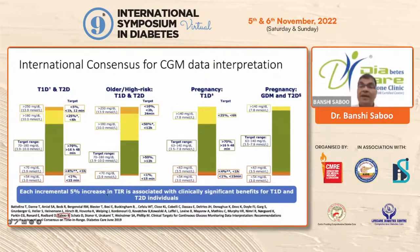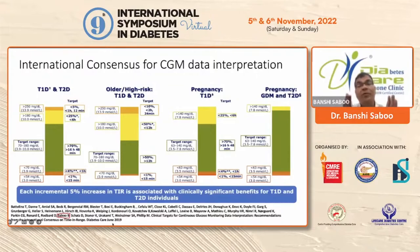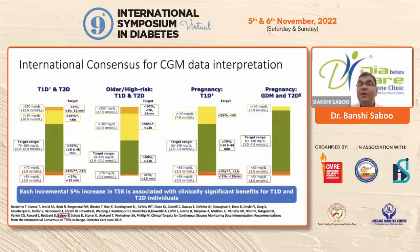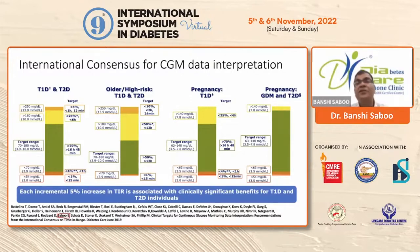I was also part of the time in range consensus published in 2019, which has been accepted worldwide by major organizations including the American Diabetes Association and the European Association for the Study of Diabetes. For elderly, high-risk patients or those with greater risk of hypoglycemia, the target is more than 50% of time between 70 to 180, and not even 1% of the time going below 70. In pregnancy, the targets become tighter: 63 to 140 mg/dL, with at least 90% time in range, less than 5% above 140, and less than 5% below 63.